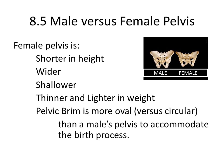When looking at a model or skeleton, it's easy to identify male versus female pelvis. The female pelvis will be shorter in height, wider, and shallower. It will also be thinner and lighter in weight, which is contrary to what you might expect. The pelvic brim is more oval-shaped in the female pelvis compared to the smaller, more circular shape in the male. All of these differences exist to accommodate the birthing process.